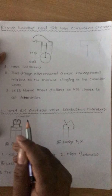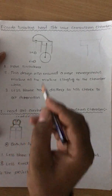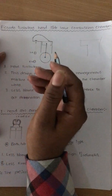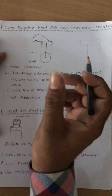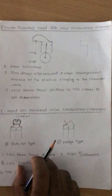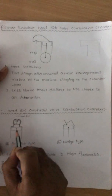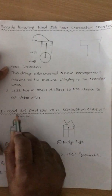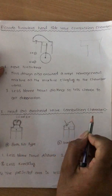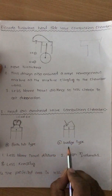The next design is the I-head, also called the overhead valve combustion chamber. Earlier, the valves were at the side — T-head, L-head, or Ricardo turbulent head. Now the valves are placed at the top, that is, at the head. That is why it is called the I-head or overhead valve combustion chamber. This I-head type comes in two sub-types: bath type and wedge type.